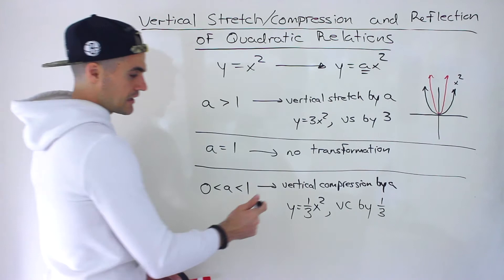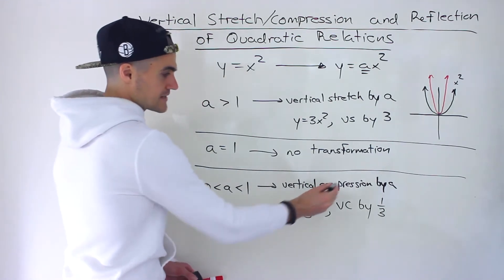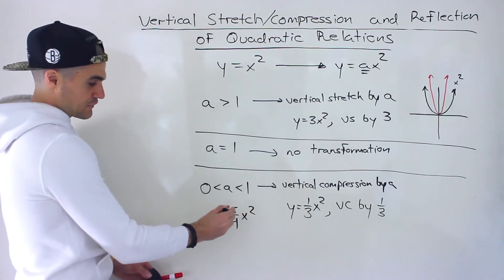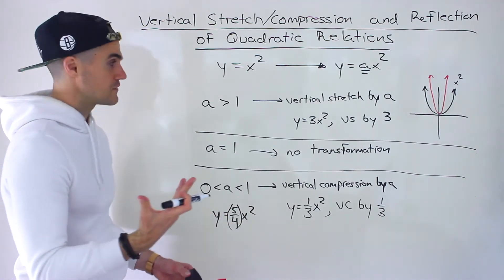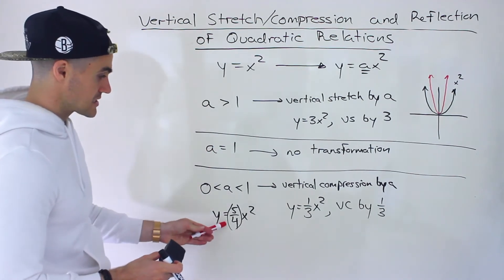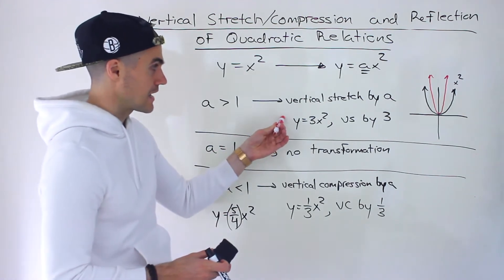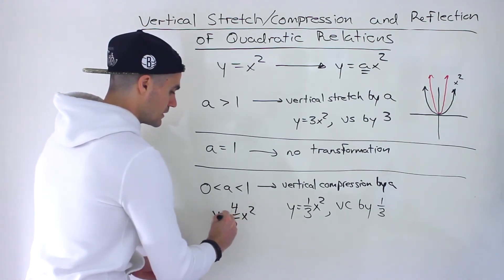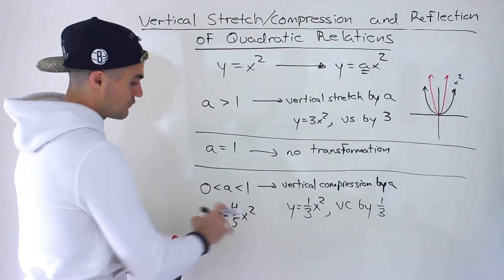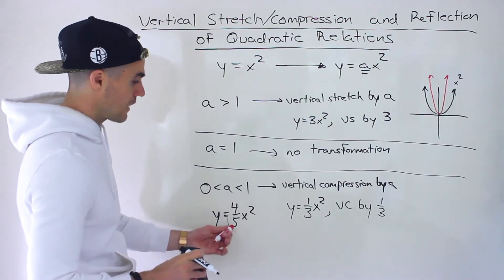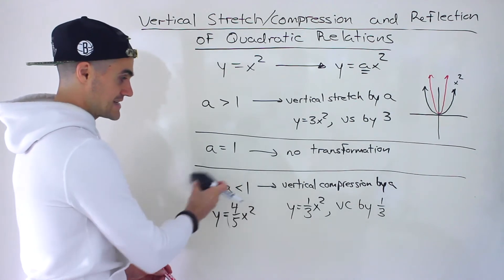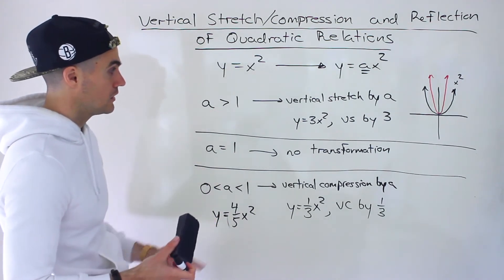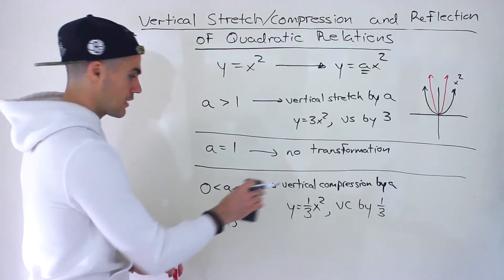One thing to be careful about: not all fractions are necessarily a vertical compression. For example, y equals five-fourths x squared — this is a fraction, but five-fourths is 1.25, so that's an a value greater than one, meaning it would actually be a vertical stretch. But four-fifths, which is 0.8, would be a vertical compression by four-fifths. So just be careful — lots of times students see fractions and automatically assume it's a compression, but some fractions can also be greater than one and would end up being a vertical stretch.